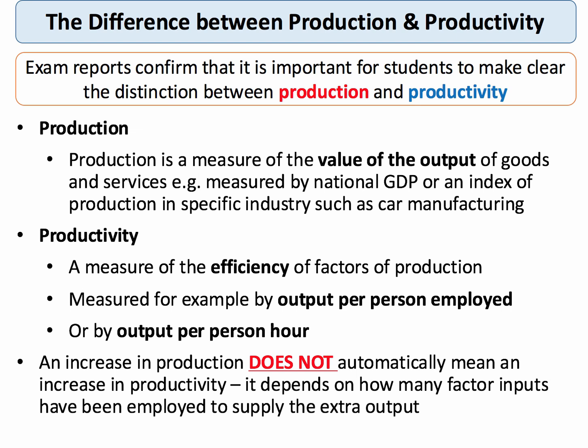Now, productivity is subtly different, but with important differences. Productivity is a measure of the efficiency of a factor input or a factor of production. The basic measure of productivity would be the value of output per person employed, or perhaps the value of output per hour worked.